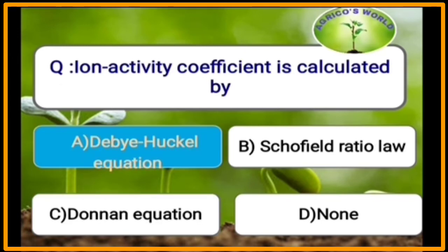Ion activity coefficient is calculated by the Debye-Hückel equation.